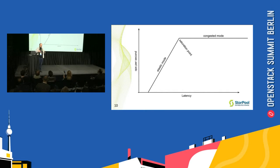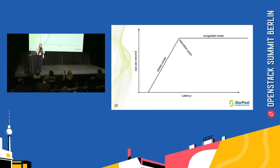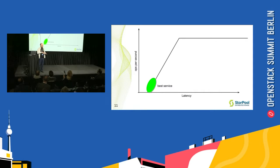These systems tend to have two very different modes of operation. One we call the elastic mode — you have more demand, you get more work done. Then in the congested mode, you get more demand, you don't get more work done. In your application, where you want the best user experience — pages opening fast — you want to run in this elastic part of the curve.